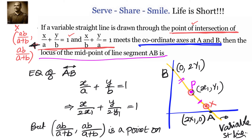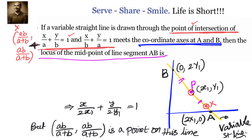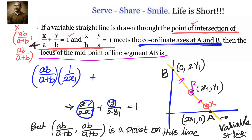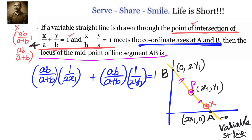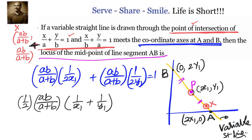Substituting x = ab/(a+b) and y = ab/(a+b) into the equation gives: [ab/(a+b)] · [1/(2x₁)] + [ab/(a+b)] · [1/(2y₁)] = 1. Taking ab/(a+b) · (1/2) common, we get: [ab/(a+b)] · (1/2) · (1/x₁ + 1/y₁) = 1. Simplifying further: (1/2) · [ab/(a+b)] · (x₁ + y₁)/(x₁y₁) = 1.